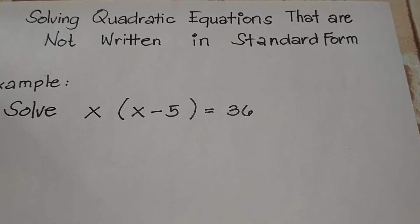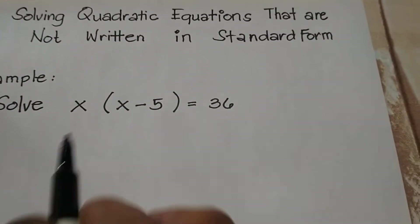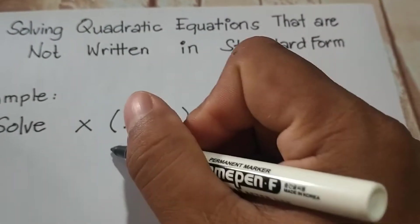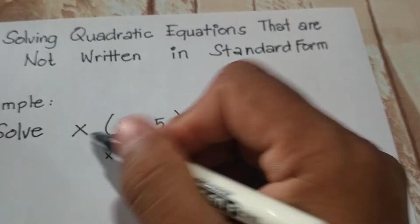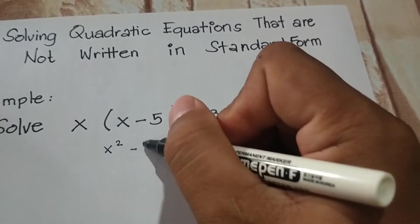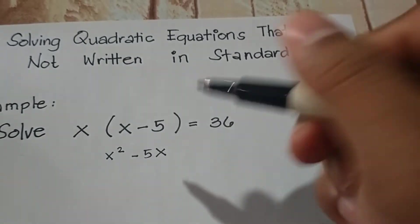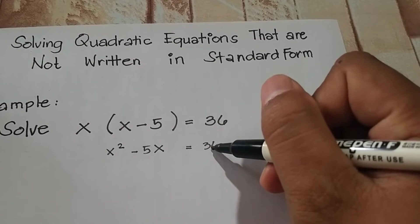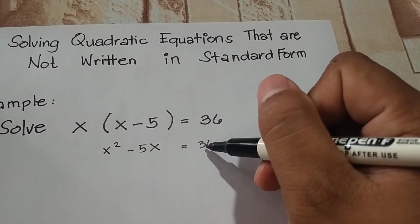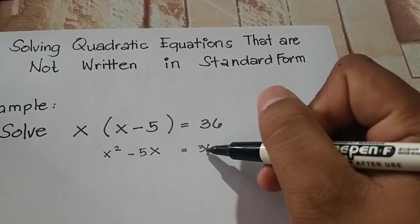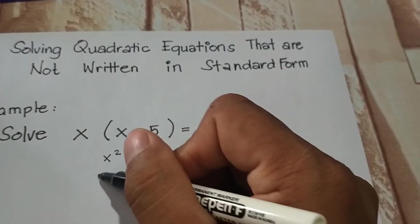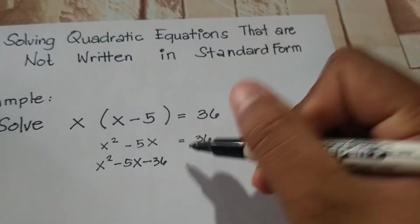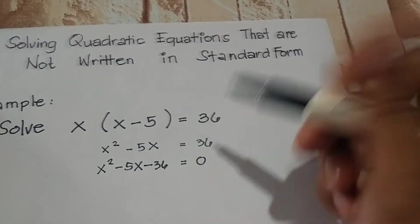So if we have this equation, we are going to simplify the expression first. We have to distribute x to the quantity of x minus 5, so that gives us x squared, and x times negative 5 gives negative 5x, equals 36. Now we apply the subtraction property of equality, so 36 is transferred to the other side, giving us x squared minus 5x minus 36 is equal to 0.